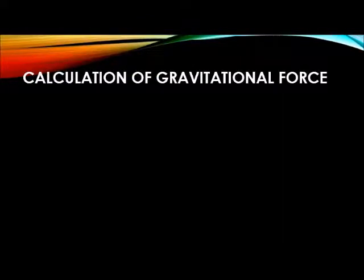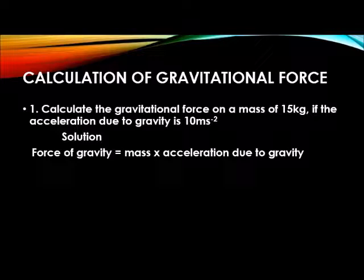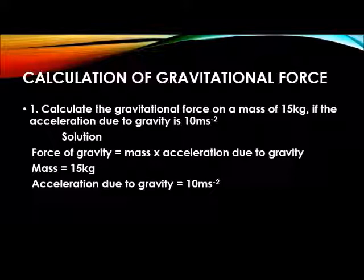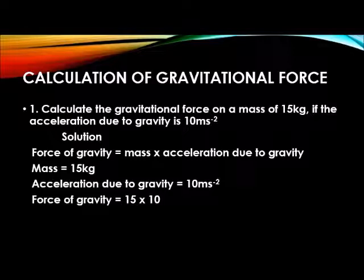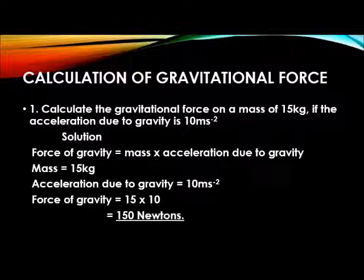Calculation of gravitational force: Calculate the gravitational force on a mass of 15 kg if the acceleration due to gravity is 10 m/s². Solution: Force of gravity = mass × acceleration due to gravity. Where mass = 15 kg and acceleration due to gravity = 10 m/s². Therefore, force of gravity = 15 × 10 = 150 newton.